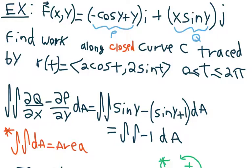They tell you the closed curve c is traced by r(t) which is equal to 2cos t for the x component and 2sin t for the y component, and t is between 0 and 2π.